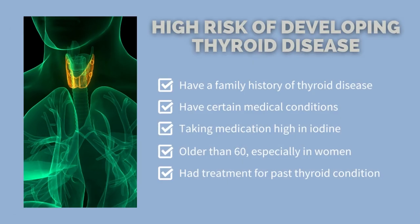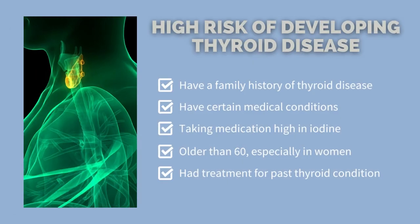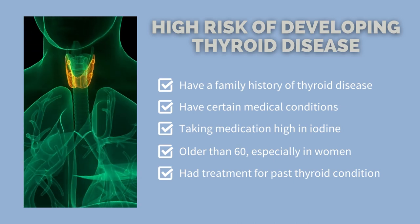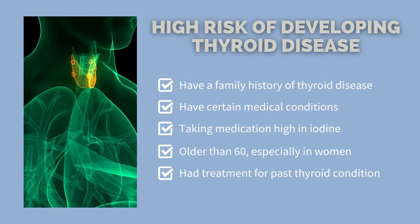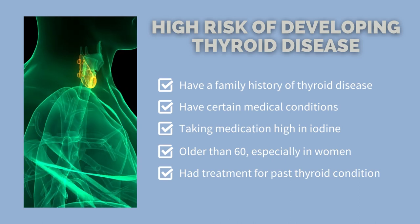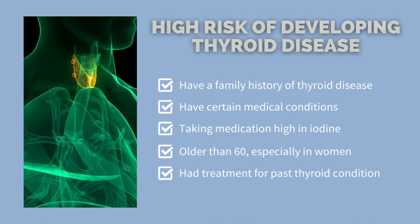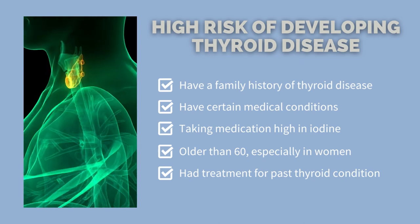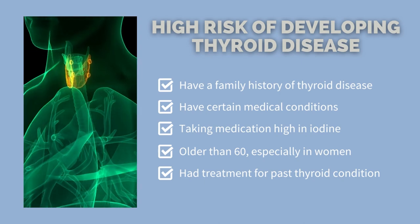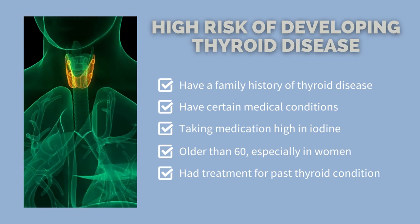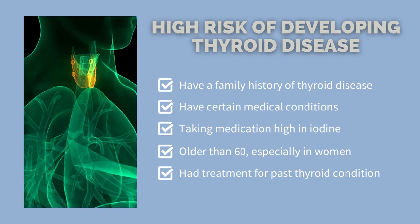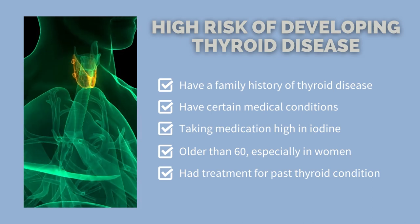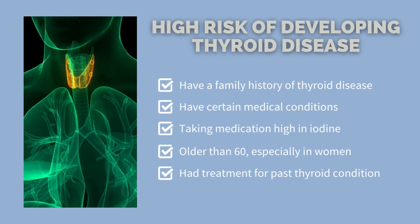You may be at a higher risk of developing a thyroid disease if you have a family history of thyroid disease, certain medical conditions such as pernicious anemia, type 1 diabetes, primary adrenal insufficiency, or lupus, take a medication that is high in iodine, are older than 60 especially if you are a woman, or have had treatment for a past thyroid condition or cancer.